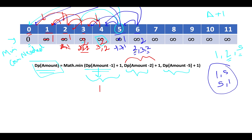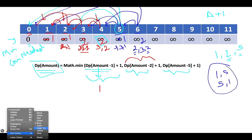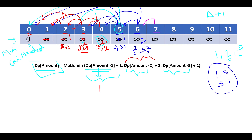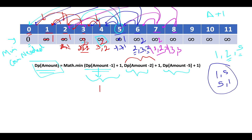For i=7: one step back gives 2 plus 1 equals 3. Two steps back to position 5 gives 1 plus 1 equals 2. Five steps back to position 2 gives 1 plus 1 equals 2. Minimum is 2, so dp[7] = 2 — using coins 2 and 5 or 5 and 2. For i=8: one step back gives 2 plus 1 equals 3. Two steps back gives 2 plus 1 equals 3. Five steps back gives 2 plus 1 equals 3. All possibilities give 3, so dp[8] = 3.